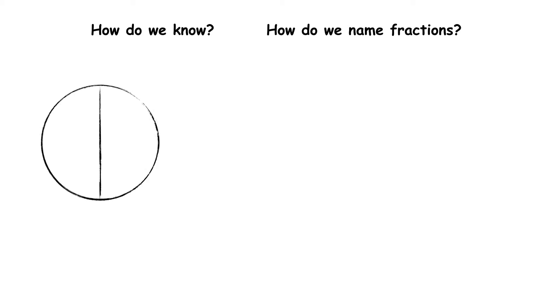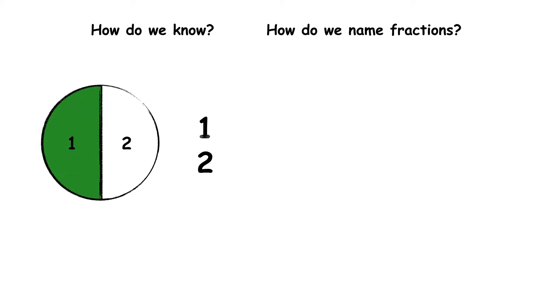But how do we know? How do we name fractions? How many pieces has this circle been cut into? It has been cut into two equal pieces. I'm going to colour in one of the two equal pieces. I have coloured in one piece out of two. When we have one piece out of a possible two, we have one-half.